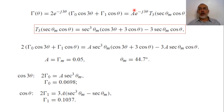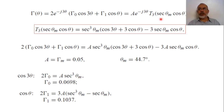Now we have determined A and θ_max, so we can start designing the Chebyshev multi-section transformer. The Chebyshev polynomial of order 3 can be given by: T_3(sec(θ_max)·cos(θ)) = sec³(θ_max)·[cos(3θ) + 3cos(θ)] − 3sec(θ_max)·cos(θ). By substituting this polynomial and equating the amplitudes of corresponding cosine terms: